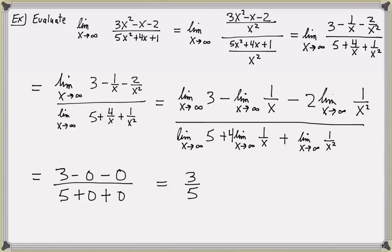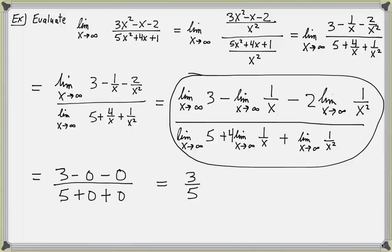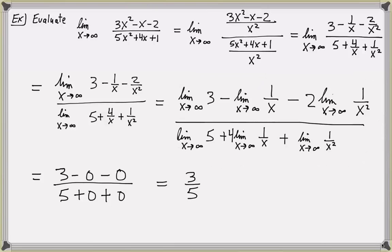In this example, I showed every single possible detail using all of the limit laws. But in general, once you have divided each term by the highest power of x in the denominator, you can often just take the limit of each piece. We see that the limit as x approaches infinity equals 3 fifths. Looking at the graph, as x gets very, very large to the right, the function approaches height 3 over 5. So we say that the line y equals 3 fifths is a horizontal asymptote of the graph of this function.